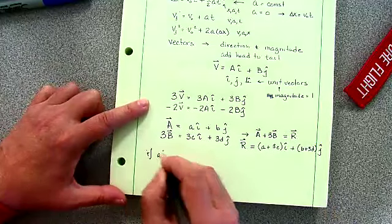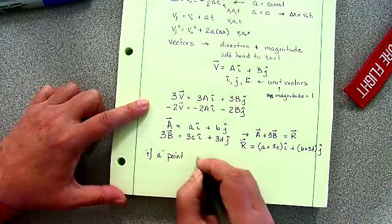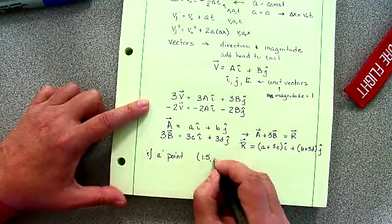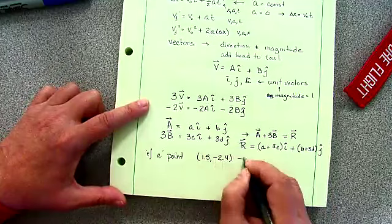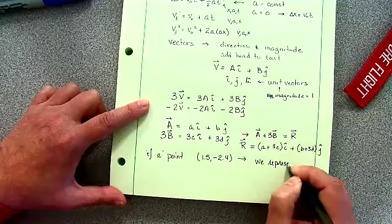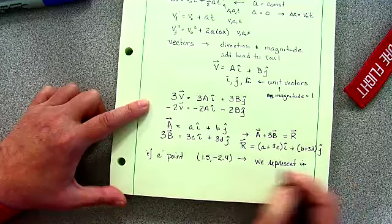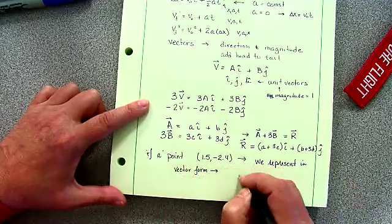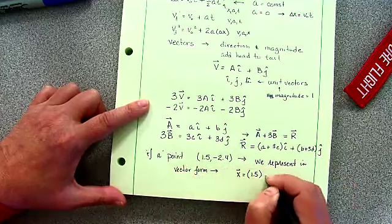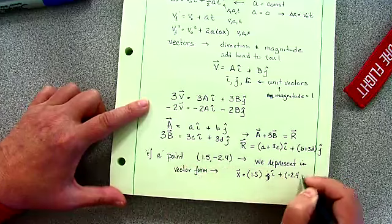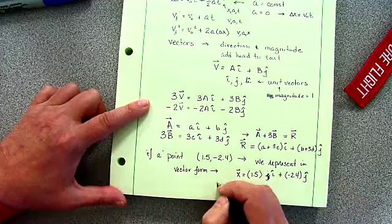If I'm given a point, we're going to use 1.5 and we'll do a minus 2.4, we can represent this in vector form, and that would now be my vector form is 1.5 in the i direction plus minus 2.4 in the j direction.